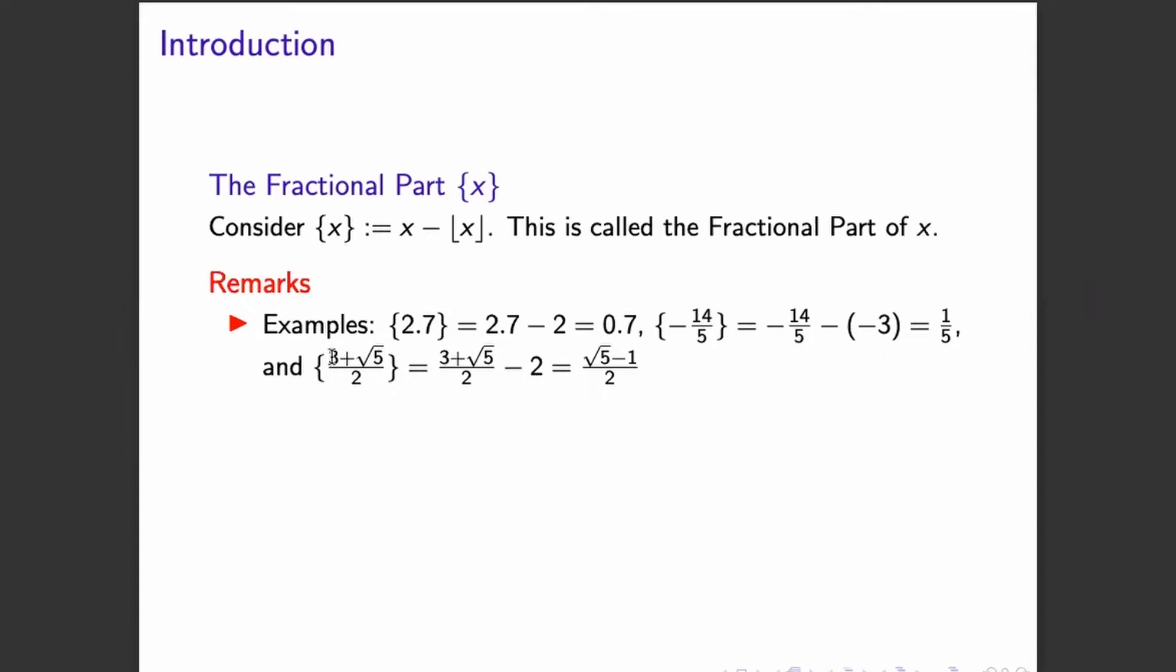We can also do that for our last example. So if we get the integer part of 3 plus square root of 5 over 2, we can get it to be 2. So the result will be the difference.